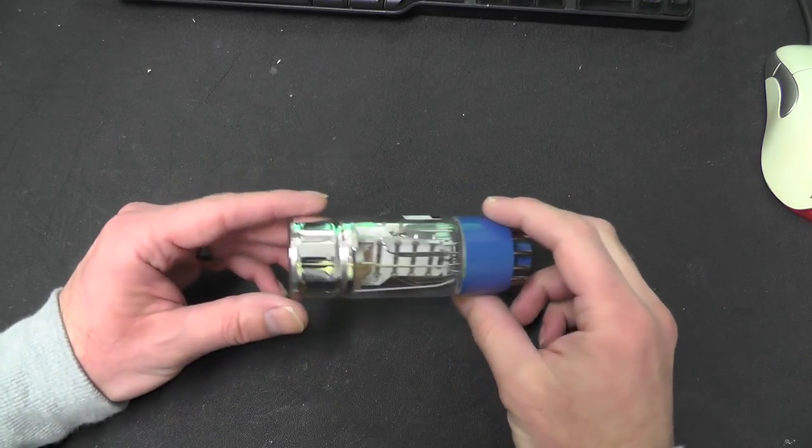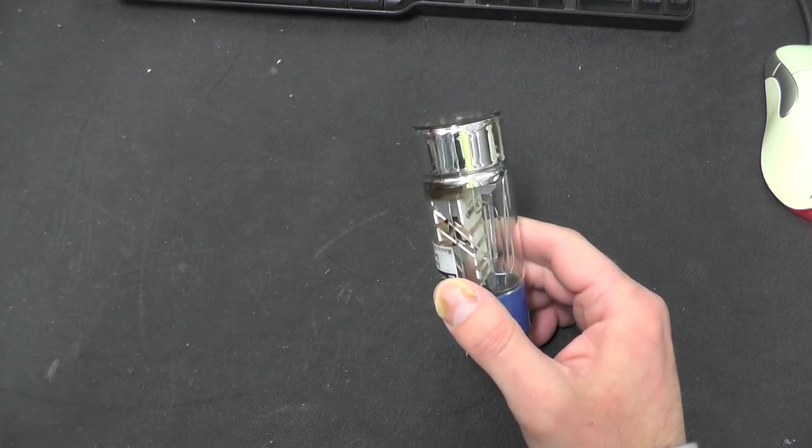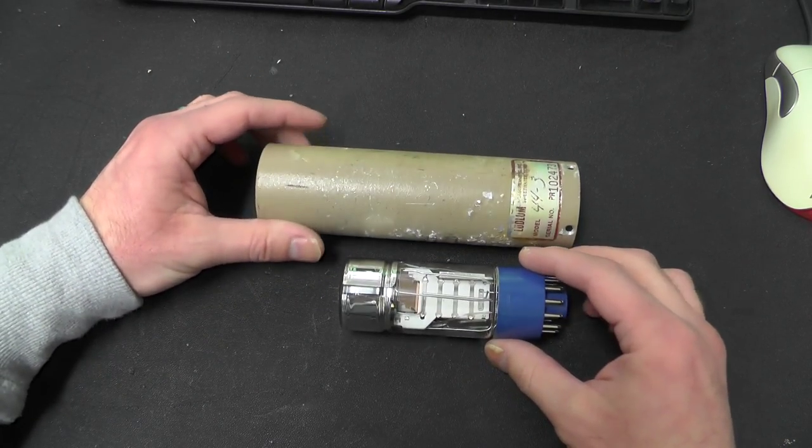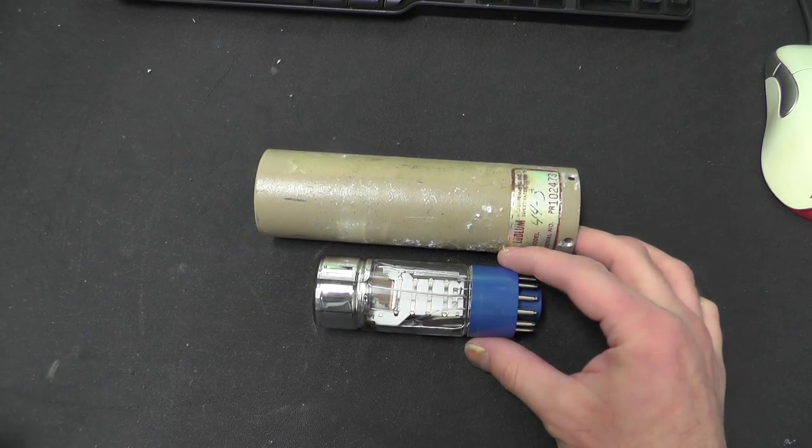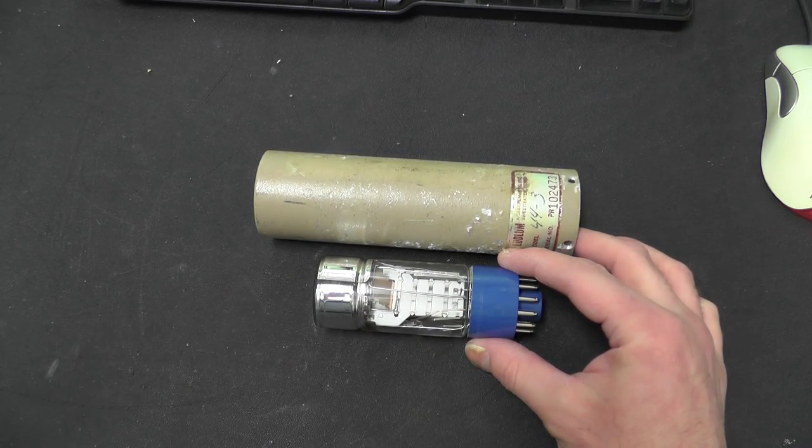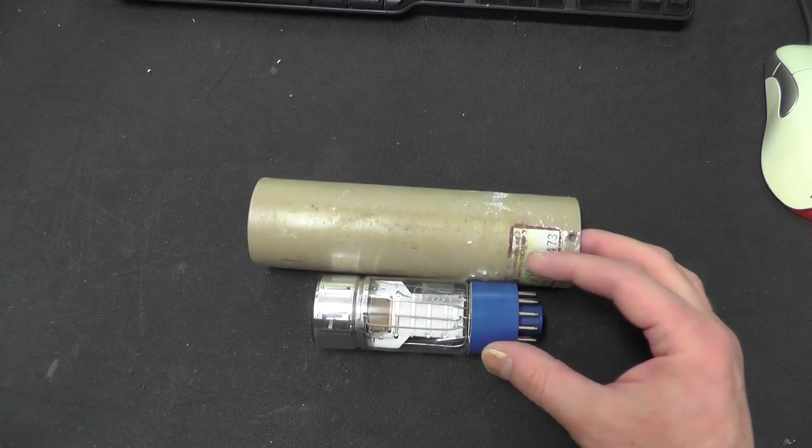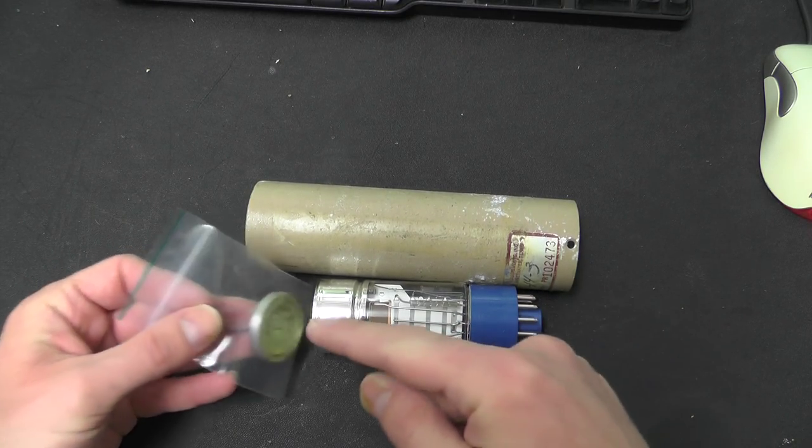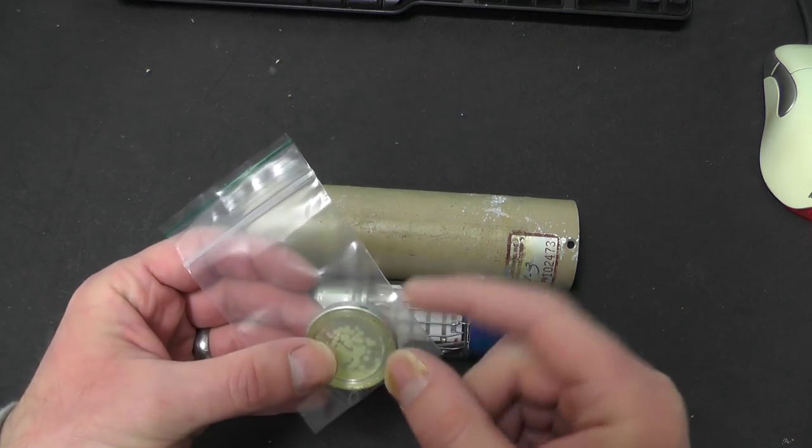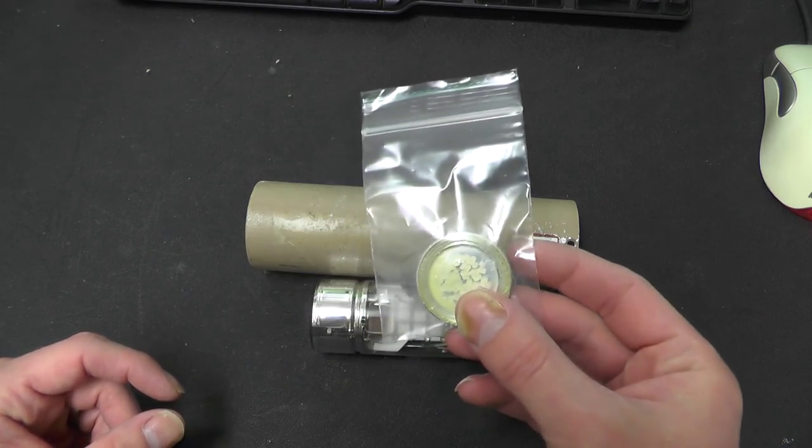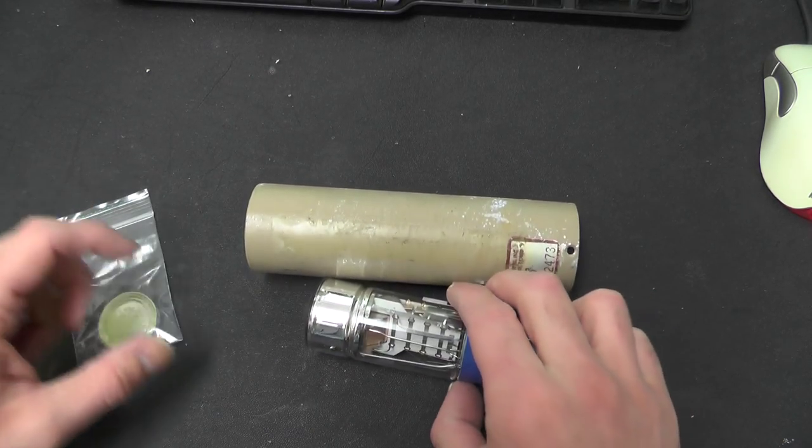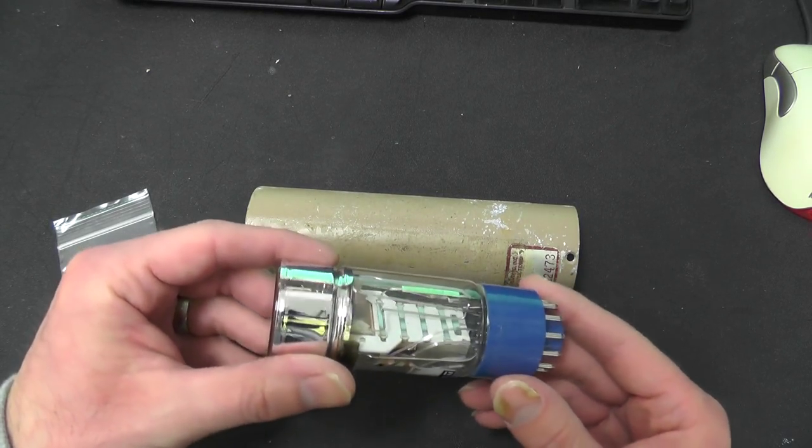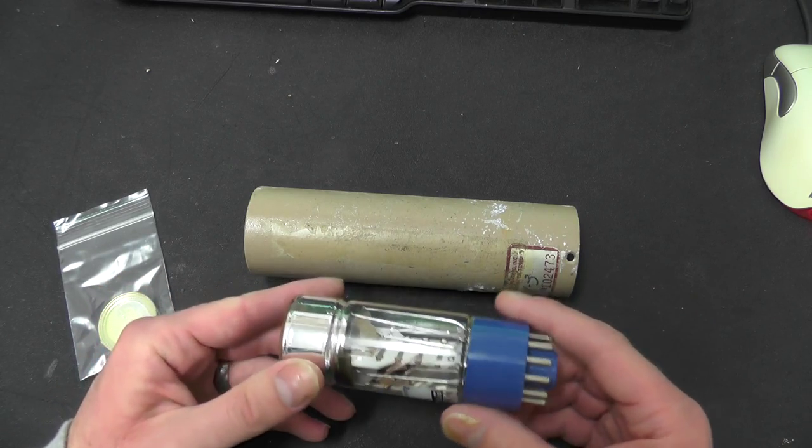So in the case of this particular tube, as I said before, it was mounted inside this Ludlum 44-3 probe. You had the tube and then you had a scintillation crystal which sat in front of the tube and emitted light when it was impacted by ionising radiation. That created light which was then accepted by the photomultiplier and then it produced an electrical signal which you can then detect with your radiation meter.